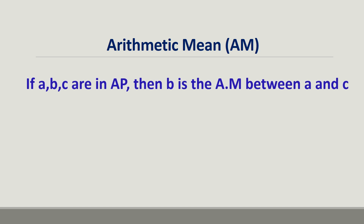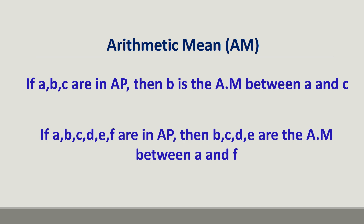If three numbers are in arithmetic progression, then the middle number is the arithmetic mean between the first term and the last term. In this case, B is the arithmetic mean between A and C. Similarly, if there are five numbers, the middle numbers are the arithmetic means between the first term and the last term.